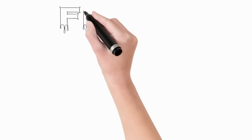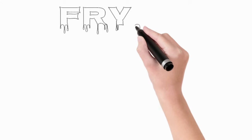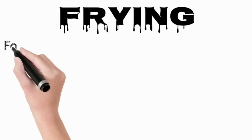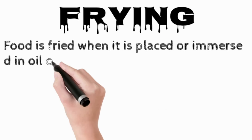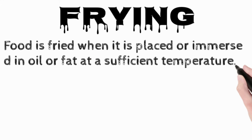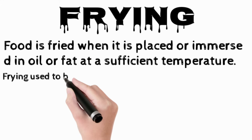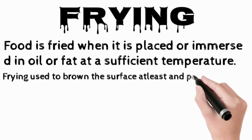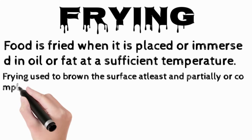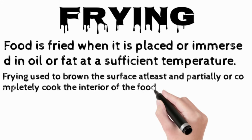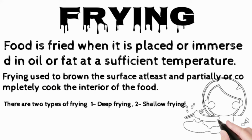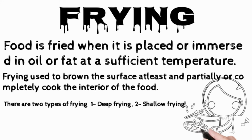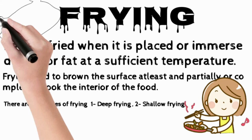Frying: food is fried when it is placed or immersed in oil or fat at a sufficient temperature. Frying is used to brown the surface and partially or completely cook the interior of the food. Frying adds flavor to otherwise bland and tender food and also creates a crisp, crunchy texture. There are two types of frying: one, deep frying; two, shallow frying.